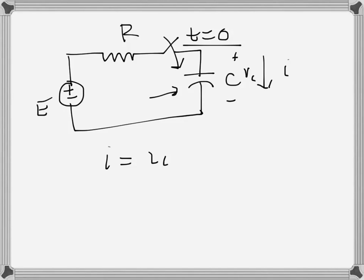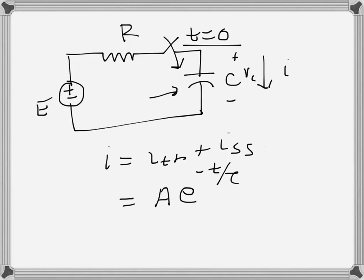Just like before, I split into a transient part and a steady-state part. The transient part will consist of an exponentially decaying component, and the decaying rate will be the time constant, which is RC here. So the expression will be similar to the inductance case, with e to the power of minus t over tau.